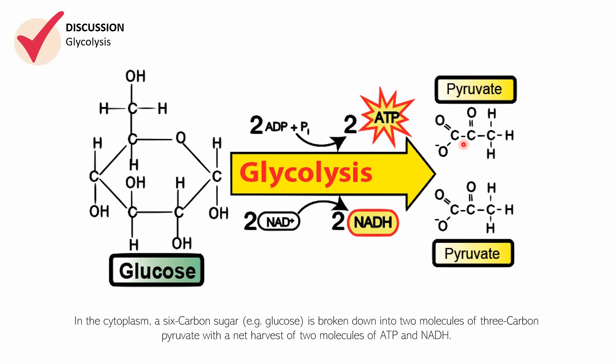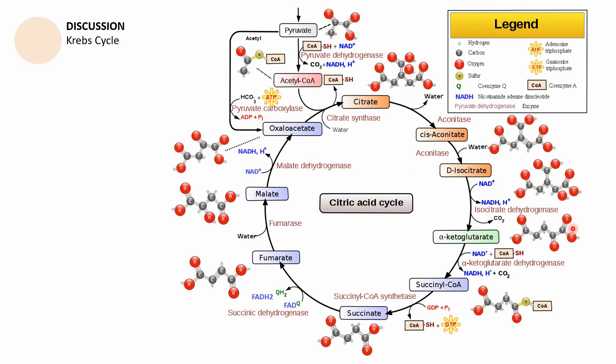And these pyruvates have one, two, three carbons in them. These pyruvates also are subject to different fates. Okay, right after glycolysis, it can undergo other reactions. It can be involved in different types of reactions. And for the purpose of this discussion, it is going to continue in Krebs cycle.